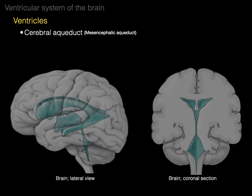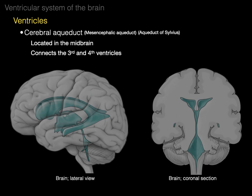Then there's the cerebral aqueduct, also called the mesencephalic aqueduct or the aqueduct of Sylvius. It's located in the midbrain and it connects the third and the fourth ventricles. There's the third ventricle, there's the cerebral aqueduct, and there's the fourth ventricle. In the coronal section, there's the third ventricle, the cerebral aqueduct in the midbrain on either side, and there's the fourth ventricle.